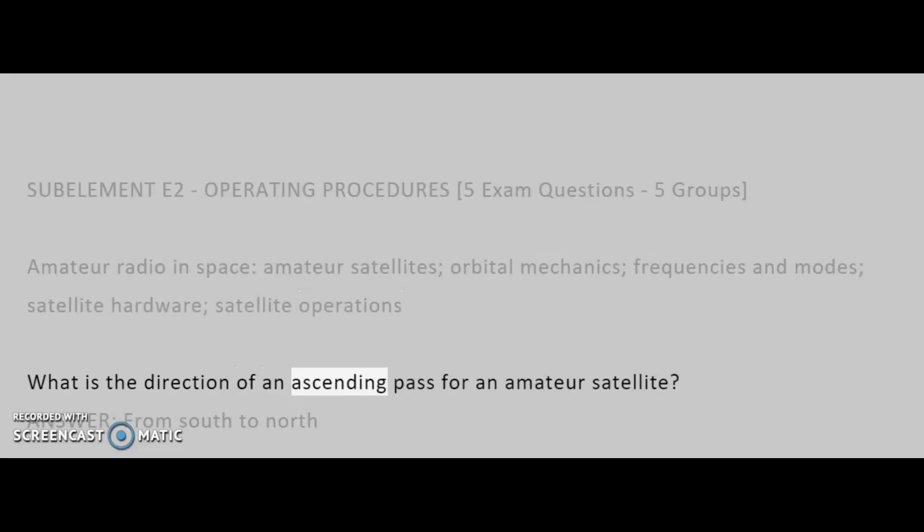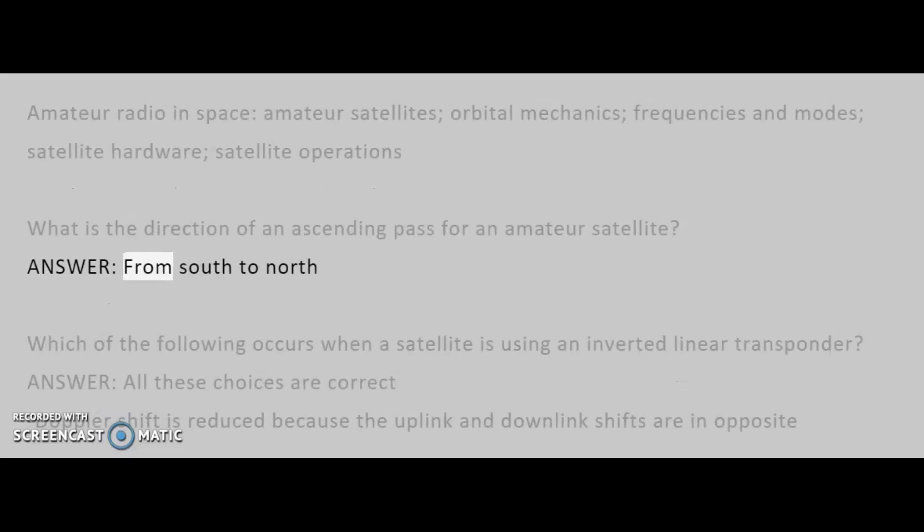What is the direction of an ascending pass for an amateur satellite? Answer: From South to North.